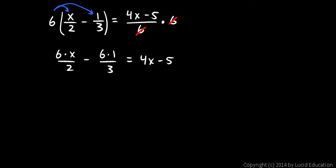I said that multiplying by 6 would get rid of all the fractions, and we see that happen here. On the left, the 6 and the 2 reduce — that just becomes a 3. And the 3 and the 6 reduce — that just becomes a 2. So the left side of the equation is now 3x minus 2, and the right side is 4x minus 5. We've made the equation simpler by clearing out all the fractions.